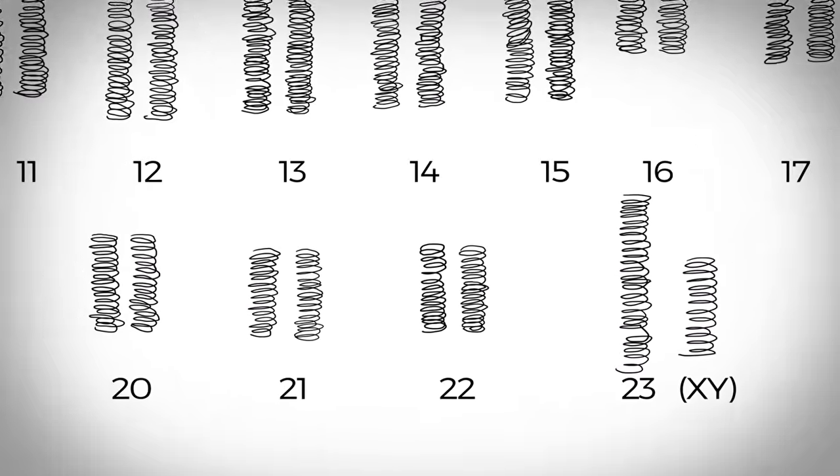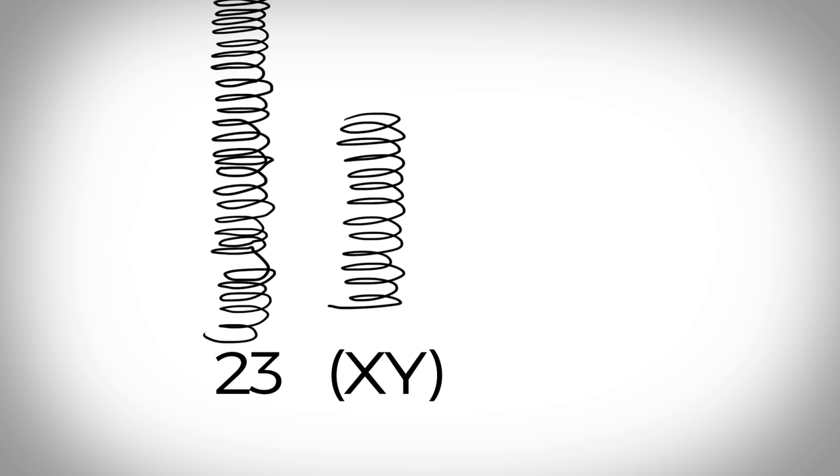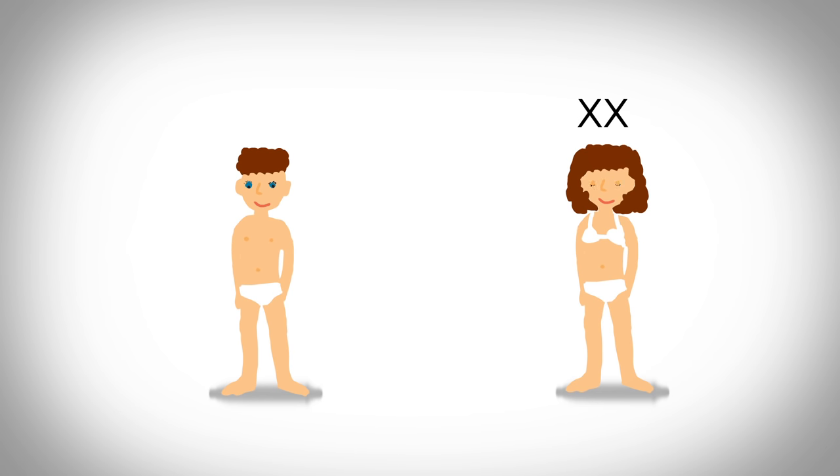22 of these pairs, called autosomes, look the same in both males and females. The 23rd pair, the sex chromosomes, differ between males and females. Females have two copies of the X chromosome, while males have one X and one Y chromosome.